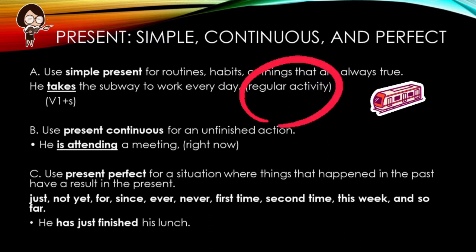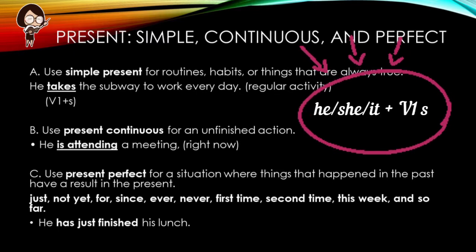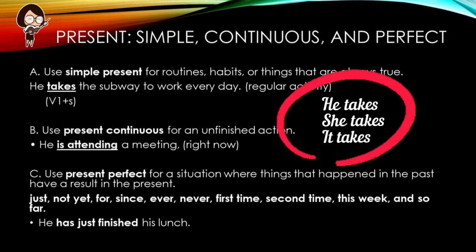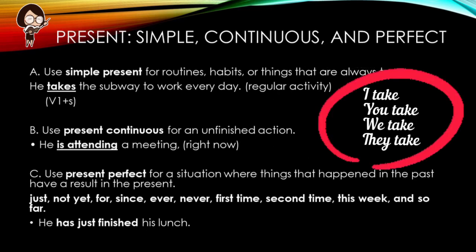Perlu diingat bahwa ini adalah regular activity atau aktivitas yang selalu terjadi dalam waktu yang beraturan. Kata kerja dalam kalimat ini menggunakan imbuhan S karena subjek dari kalimat ini adalah 'he'. Dalam simple present, subjek he, she, it selalu memiliki kata kerja dengan imbuhan S — he takes, she takes, it takes — sementara subjek I, you, we, they kata kerjanya tanpa imbuhan S: he takes, you take, we take, they take.